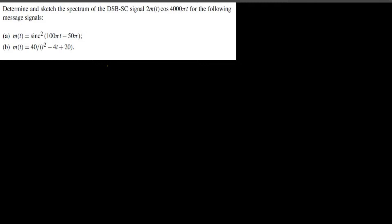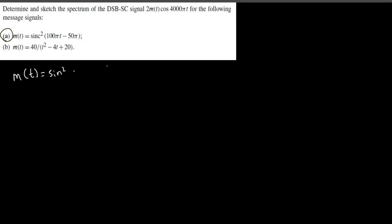We need to determine and sketch the spectrum of the DSB-SC signal 2m(t)cos(4000πt) for a given message signal. There are two message signals given, but in this video we are just going to do the first one. In my next video I will do the second one. So in this video we are going to look at the message signal m(t) = sinc²(100πt - 5π).